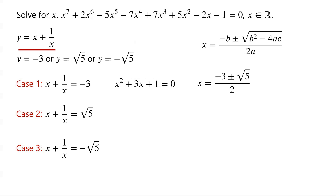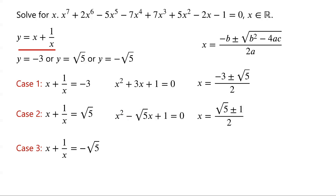For case 2, multiply the equation by x and rearrange: x squared minus root 5 times x plus 1 equals 0. The coefficients are a equals 1, b equals negative root 5, and c equals 1. So x equals (root 5 plus or minus 1) over 2.